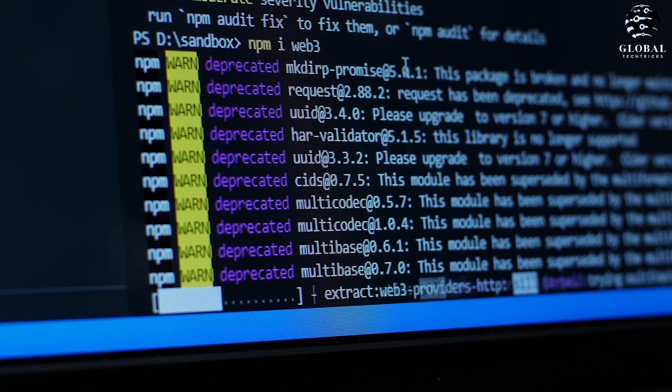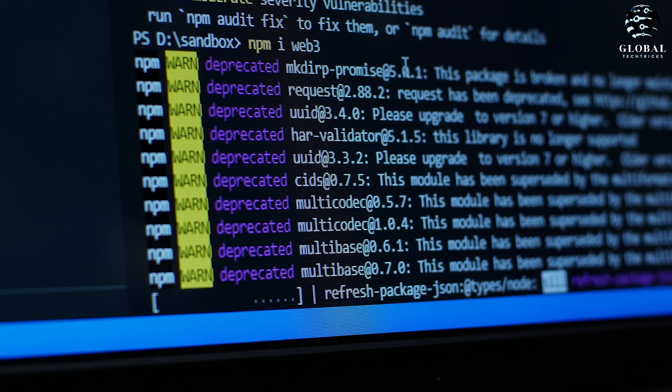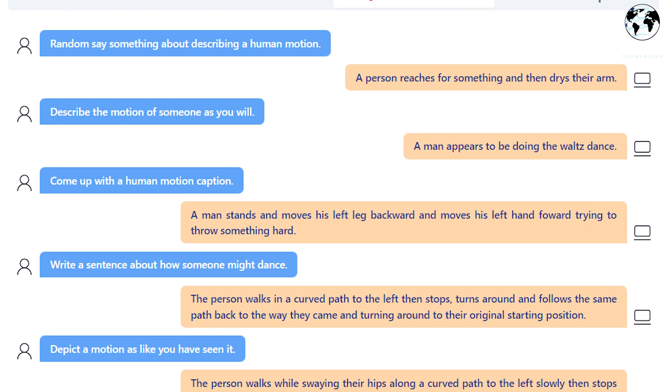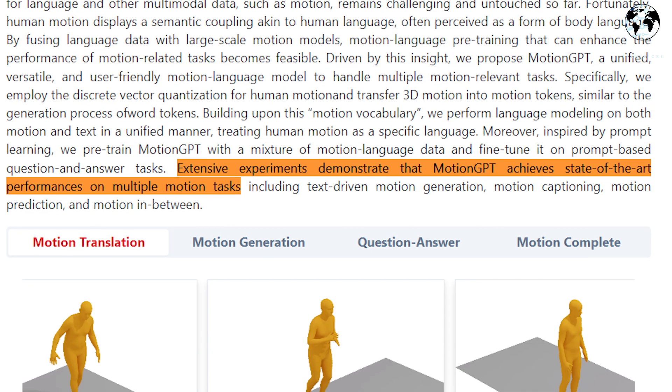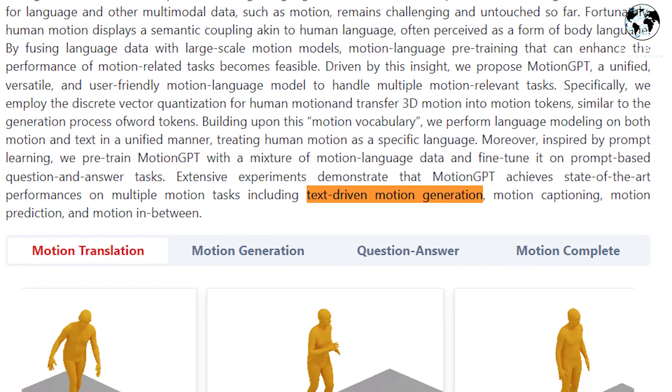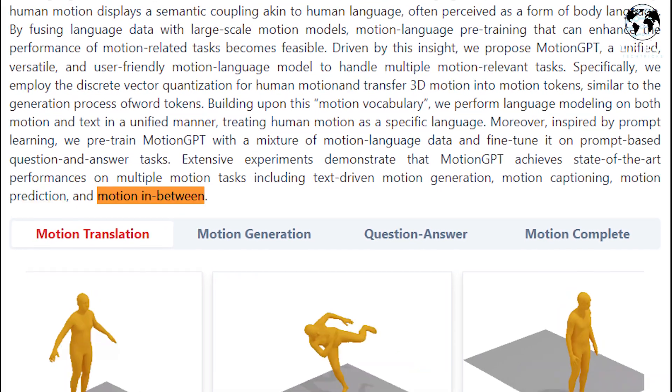Furthermore, inspired by prompt learning, Motion GPT is pre-trained using a mixture of motion language data and fine-tuned on prompt-based question-and-answer tasks. Extensive experiments showcase the state-of-the-art performance achieved by Motion GPT across various motion tasks, including text-driven motion generation, motion captioning, motion prediction, and motion interpolation.